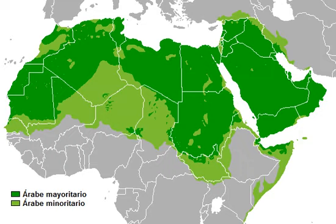It is named after the Arabs, a term initially used to describe peoples living from Mesopotamia in the east to the anti-Lebanon mountains in the west, in northwestern Arabia, and in the Sinai Peninsula. Arabic is classified as a macrolanguage comprising 30 modern varieties, including its standard form, Modern Standard Arabic, which is derived from Classical Arabic.